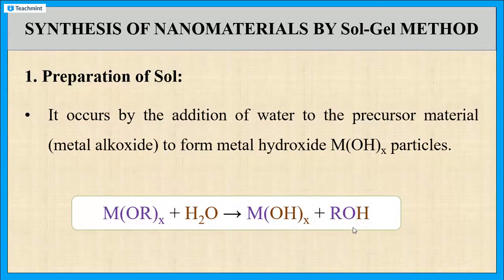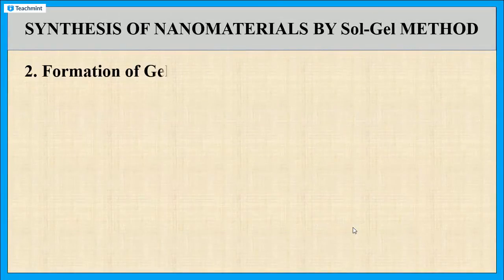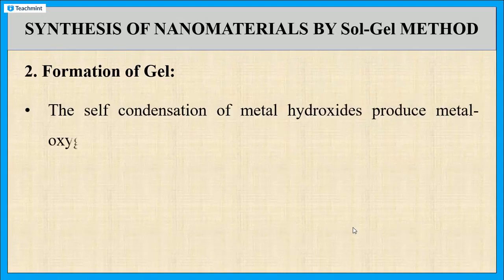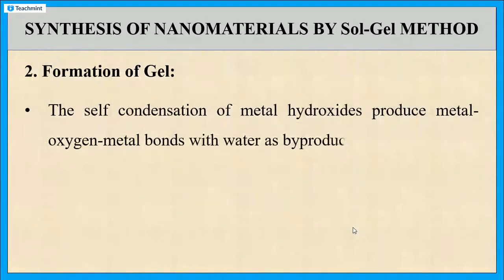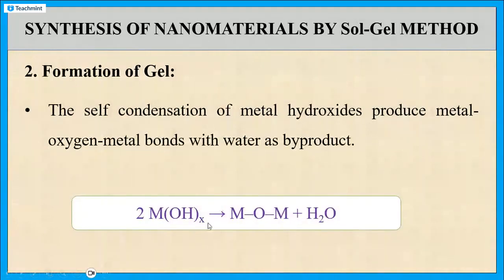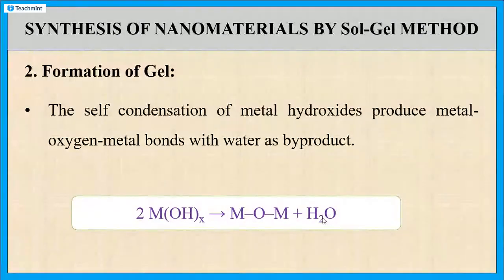The second step is the formation of gel. Here, the self-condensation of the metal hydroxide takes place. The metal hydroxide M(OH)x molecules react with each other and the formation of metal-oxygen-metal bonds takes place, along with the elimination of water molecules. This reaction leads to the formation of gel, and also leads to the growth of nanoparticles.